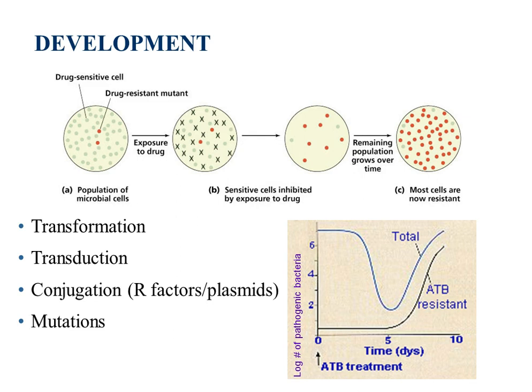Transduction: drug-resistant genes could have been picked up by a virus. The virus gets into a host cell, takes over the host cell, the host cell makes new viruses, and those viruses leave the host cell to go infect more host cells. A virus can be a carrier of drug-resistant genes.